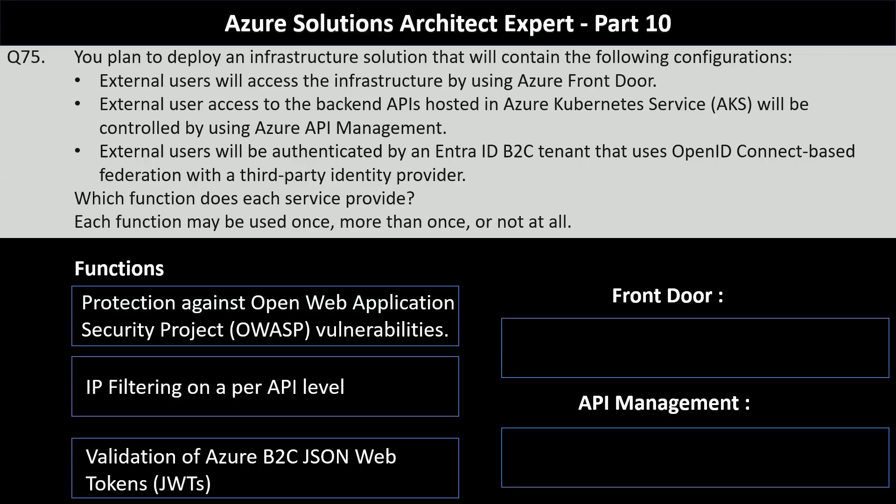Each function may be used once, more than once, or not at all. The three functions are: protection against OWASP vulnerabilities; IP filtering on a per-API level; and validation of Azure B2C JSON Web Tokens (JWT). The two services are Front Door and API Management.